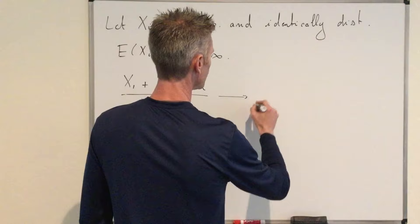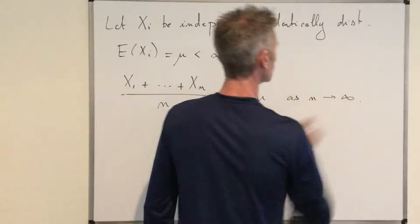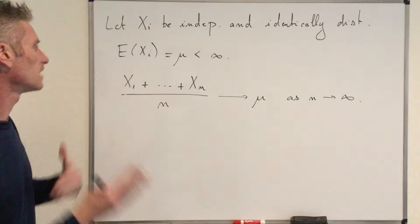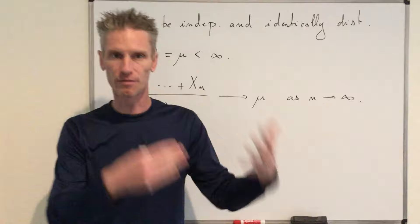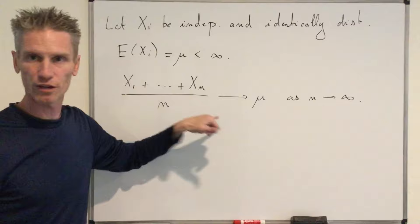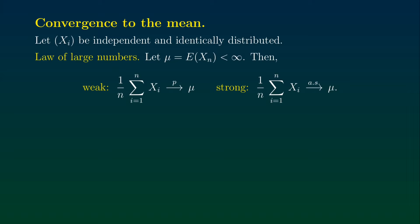So here you have convergence as n goes to infinity to mu. That's basically the conclusion of both versions of the law of large numbers — weak and strong. In a previous video, we defined different types of convergence, and that's the difference between the weak law and the strong law. In the case of the weak law of large numbers, the theorem states that the empirical mean converges to the theoretical mean mu in probability.